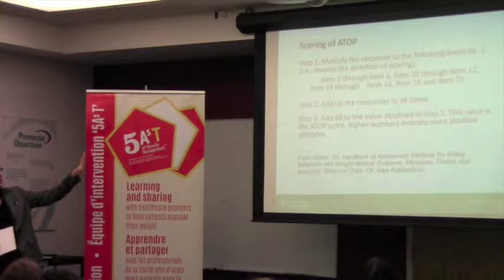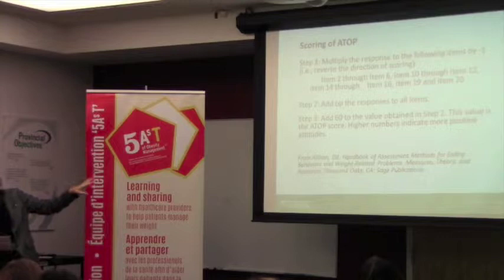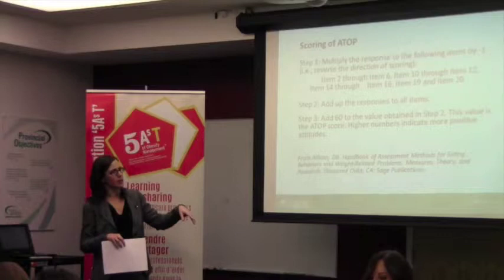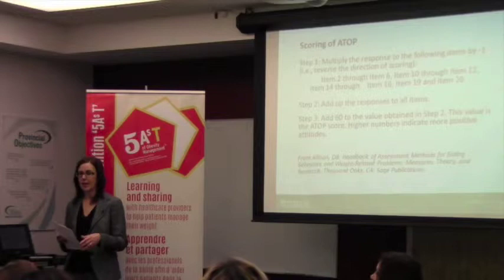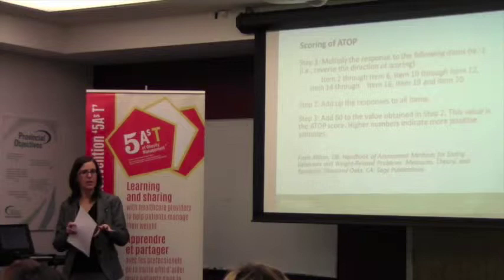Item 1, leave it as it is. Item 13, leave it as it is. Items 17 and 18, leave those as they are. The other ones, you're reversing the score. Then add the responses up based on your converted scores, add them all up, and then add 60 to your total. If you have a copy of the slides, this is on your slides too if you prefer to have it in front of you.